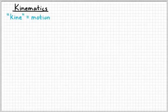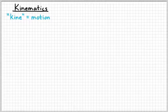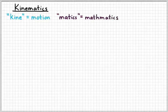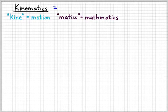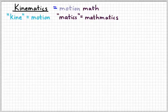So, the word prefix kine, K-I-N-E, stands for motion. We're going to see that prefix show up a few times this year in physics. And then matics stands for mathematics. So, the word kinematics basically means motion math.